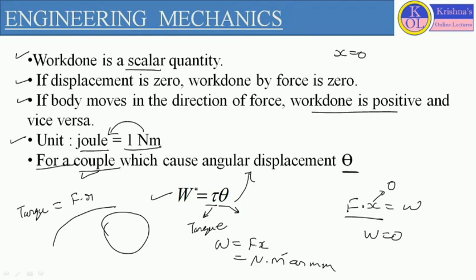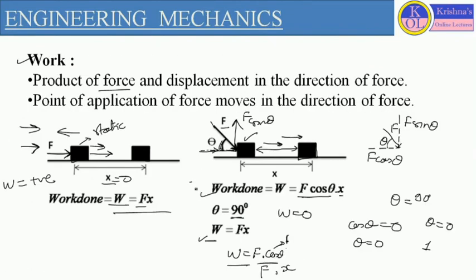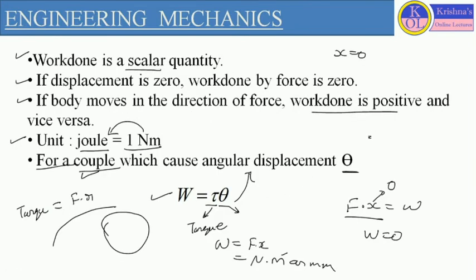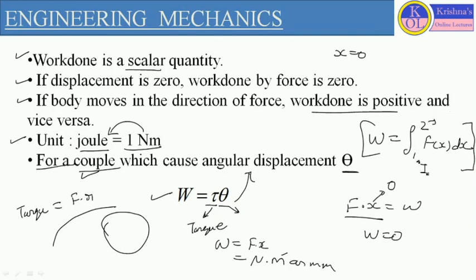Now let us consider a force which is variable with respect to displacement. If the force is constant with respect to displacement we can define a constant curve, but if the force is variable with respect to distance — meaning as displacement changes, the force value also changes — then we define the work done in terms of integration, with specified limits. This limit one represents the initial condition and limit two represents the final condition. This is all about the concepts of work.